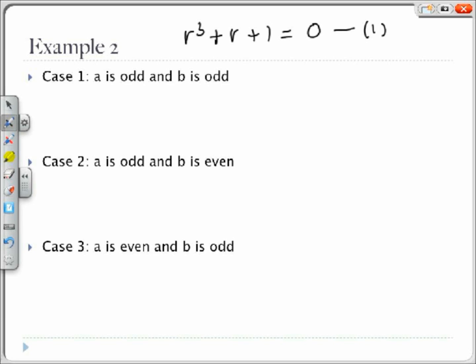For our first case with a being odd and b being odd, we get the sum of 3 odd numbers, which is odd. So the left hand side of the equation is odd, which is not equal to the right hand side of the equation, which is 0. Therefore case 1 cannot be the case.